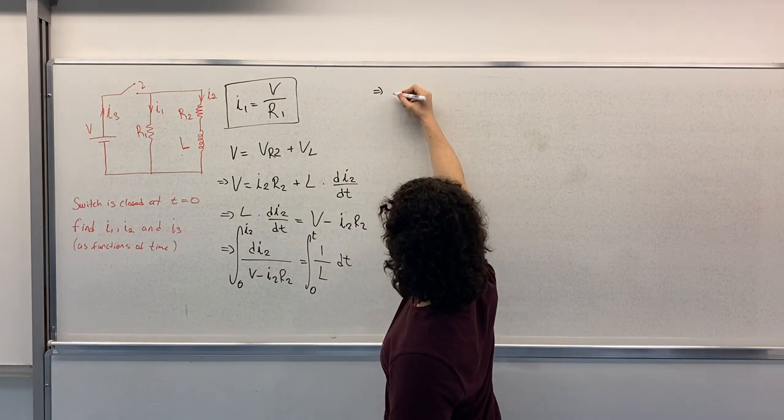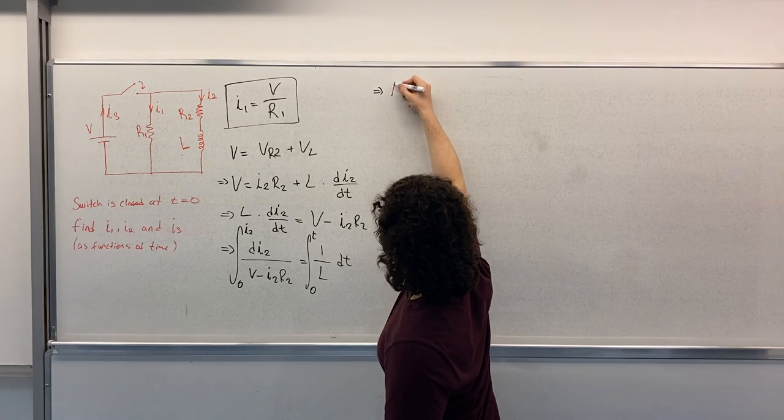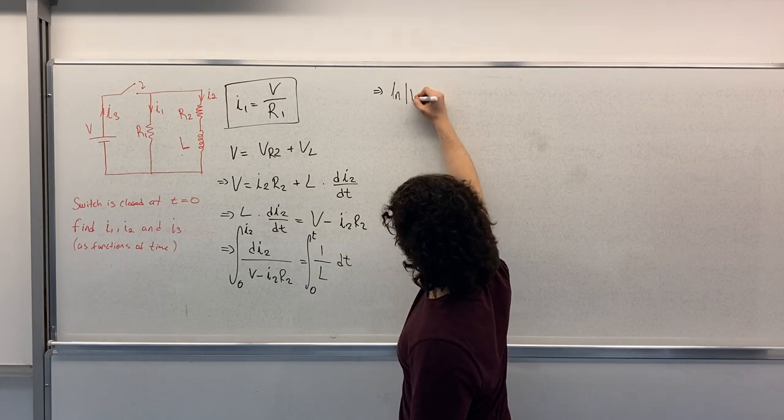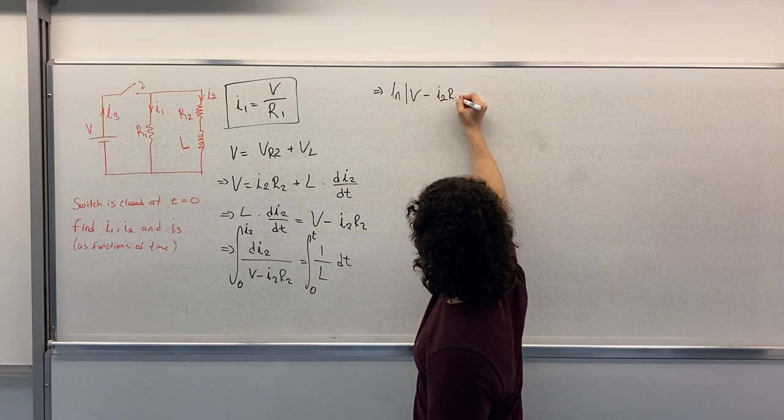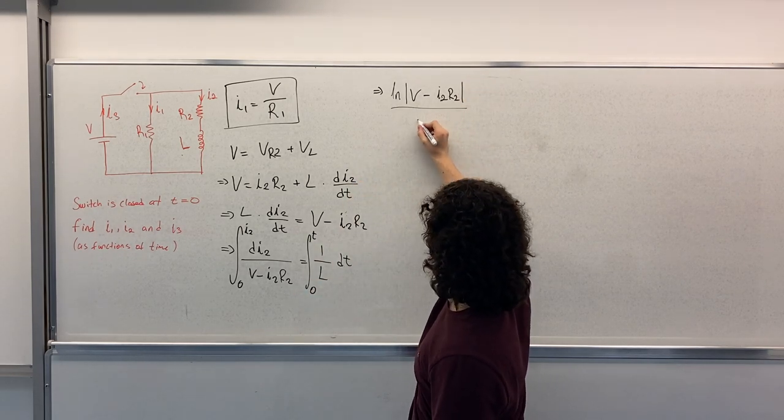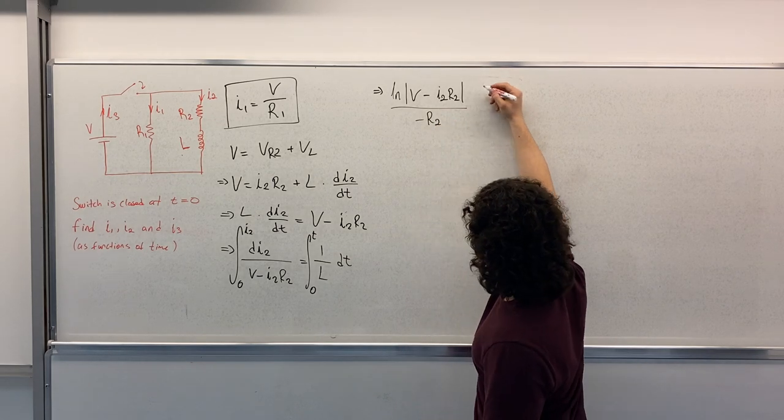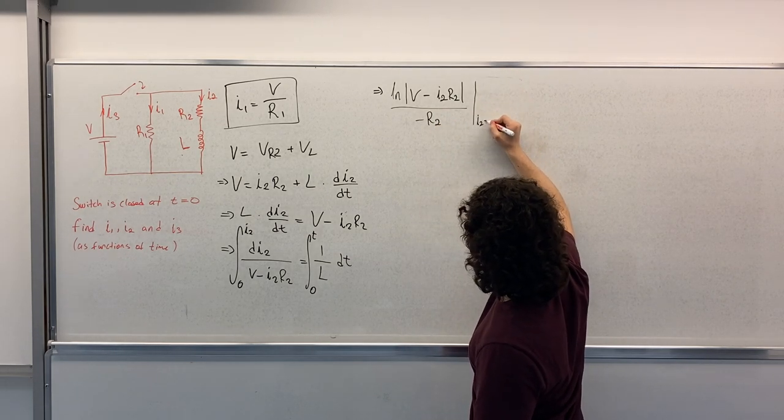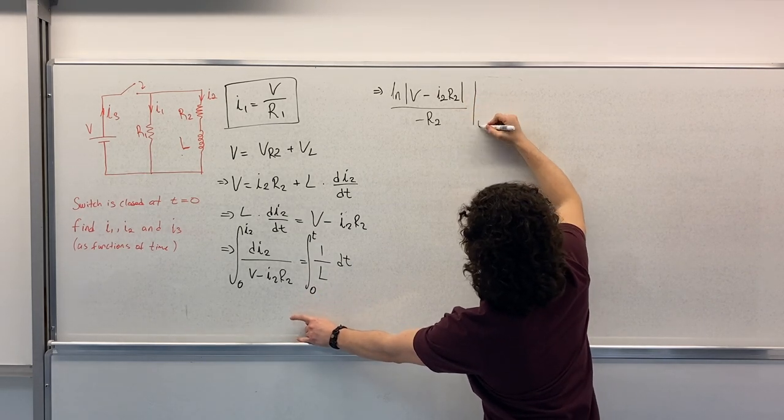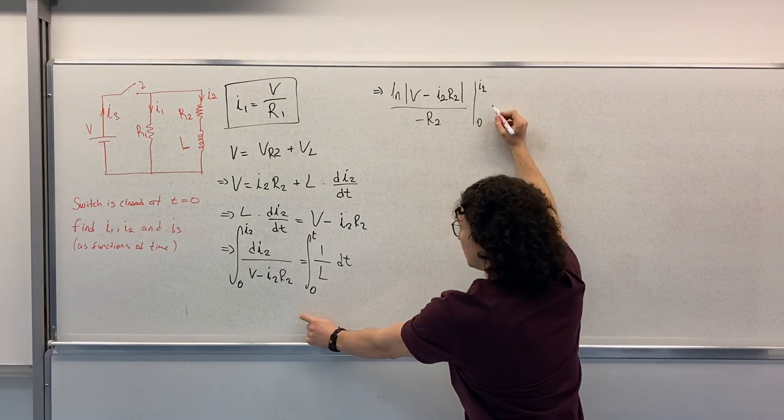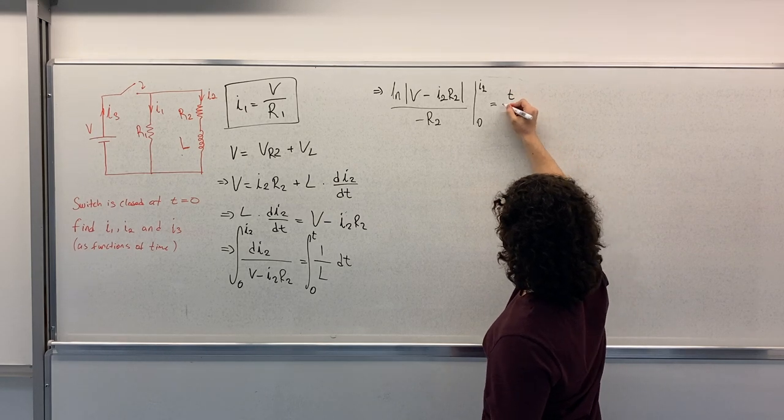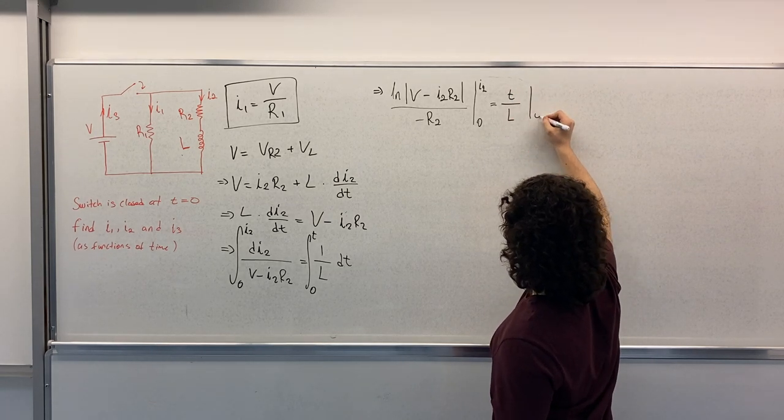This gives us Lm V minus I2 R2 divided by minus R2, from I2 equals 0 from 0 to I2. This is equal to T over L from 0 to T.